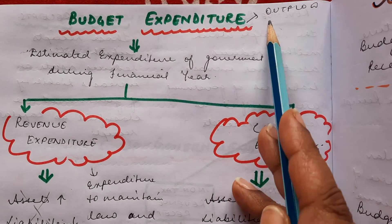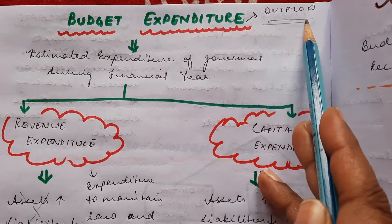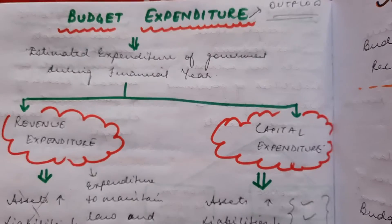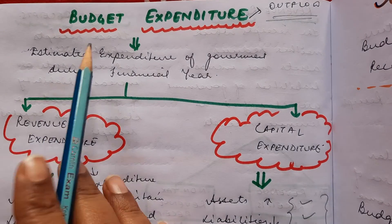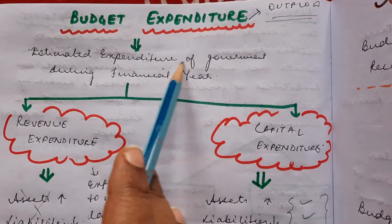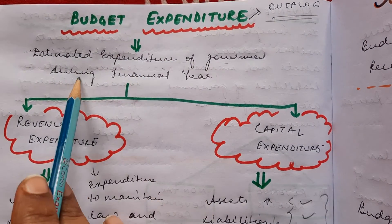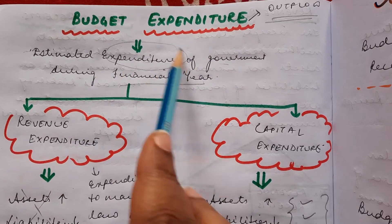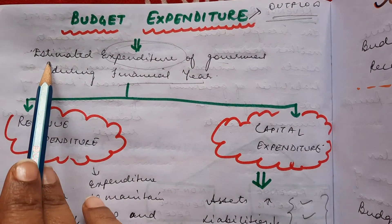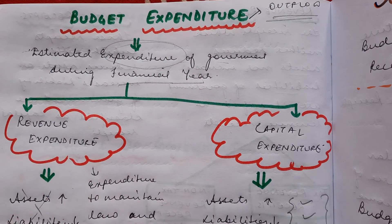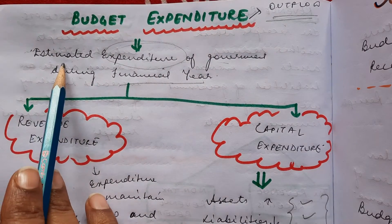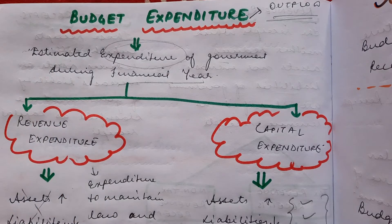Expenditure means an outflow, so there is an outflow from the government side. It is the estimated expenditure of the government during a financial year — the amount that will be spent, as estimated by the government during a financial year.